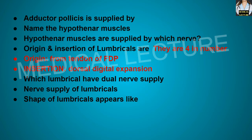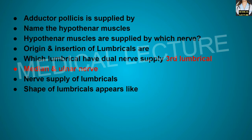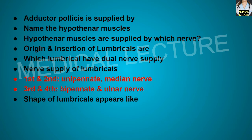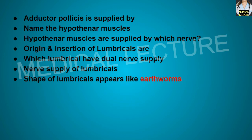Which lumbrical has dual nerve supply? The third lumbrical has dual nerve supply — median and ulnar nerve. Nerve supply of the lumbricals: the first and second lumbricals are supplied by the median nerve and are unipennate, while the third and fourth are supplied by the ulnar nerve and are bipennate. The lumbricals appear like earthworms in shape.